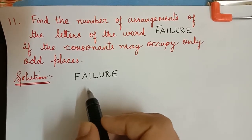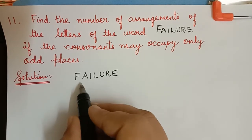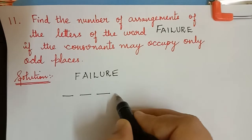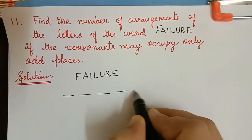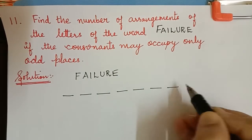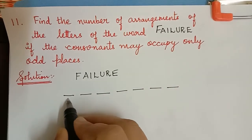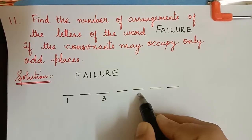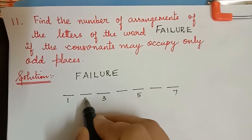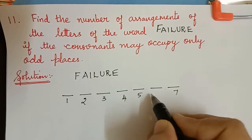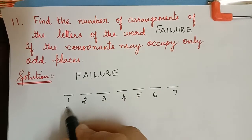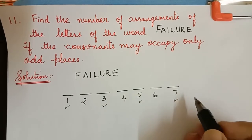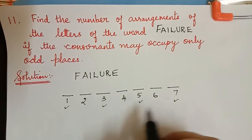Now in this word there are 7 letters, so we will be having 7 places to fill in. Out of these, the odd places will be 1, 3, 5, and 7, and the even places will be 2, 4, and 6. So the number of odd places is 4.